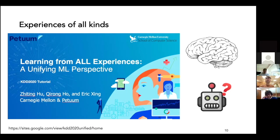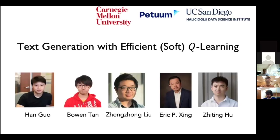In today's talk, in the first part, I will introduce one of our latest works in this line of research, trying to use reward functions to learn text generation models. This is work by students at CMU, about text generation with efficient soft Q-learning.